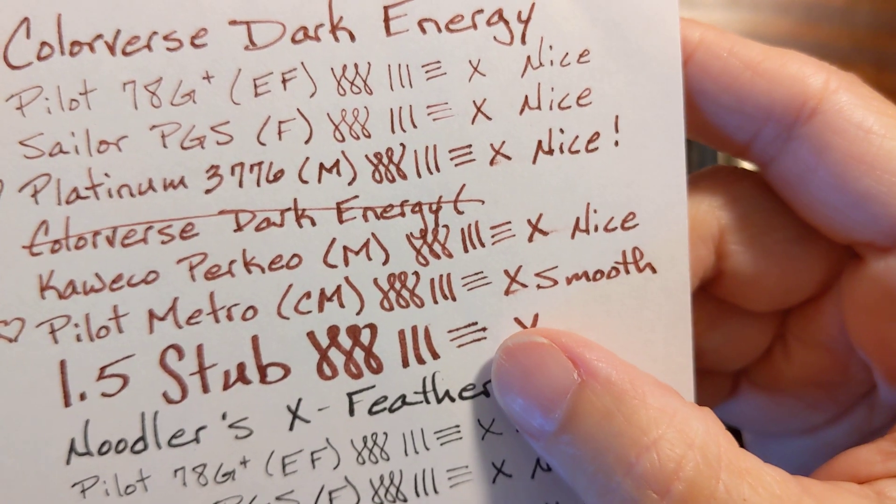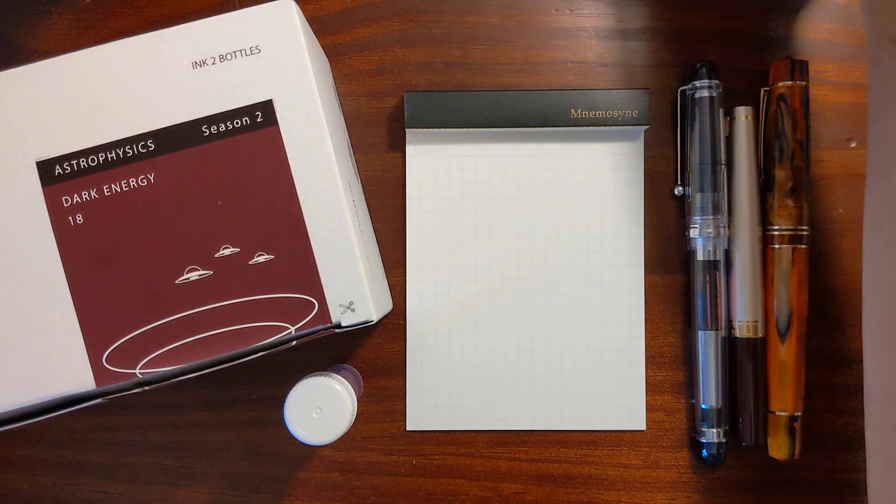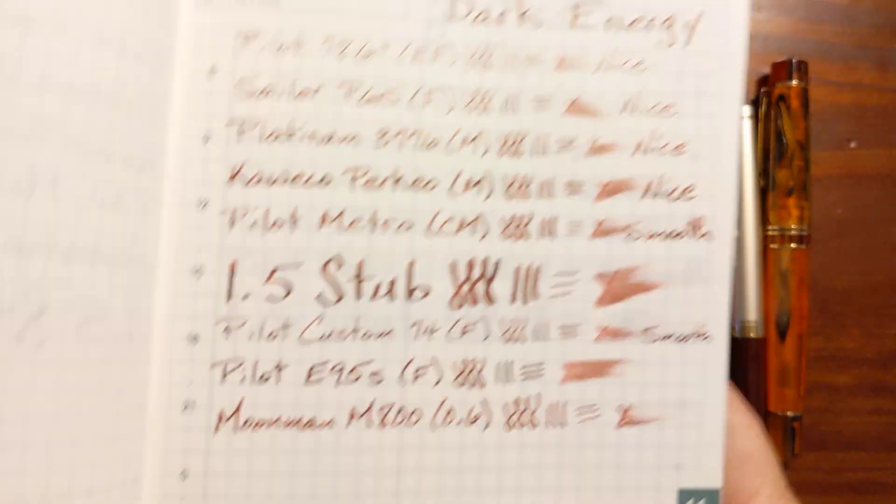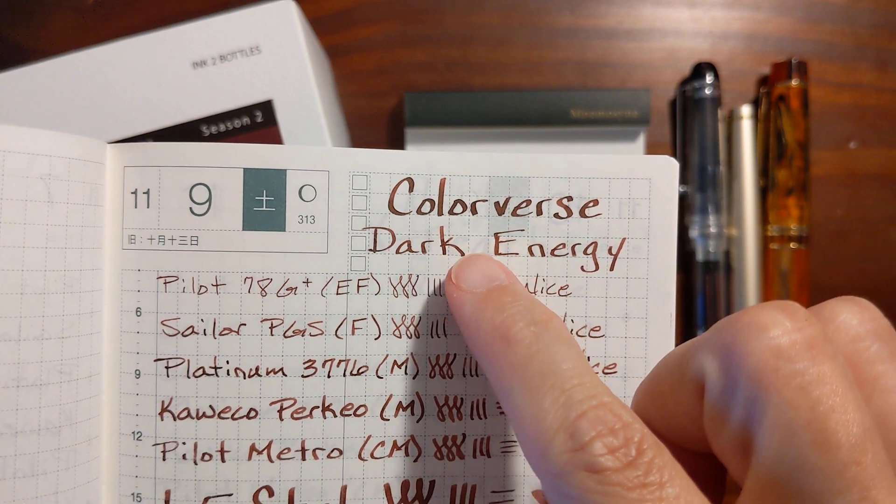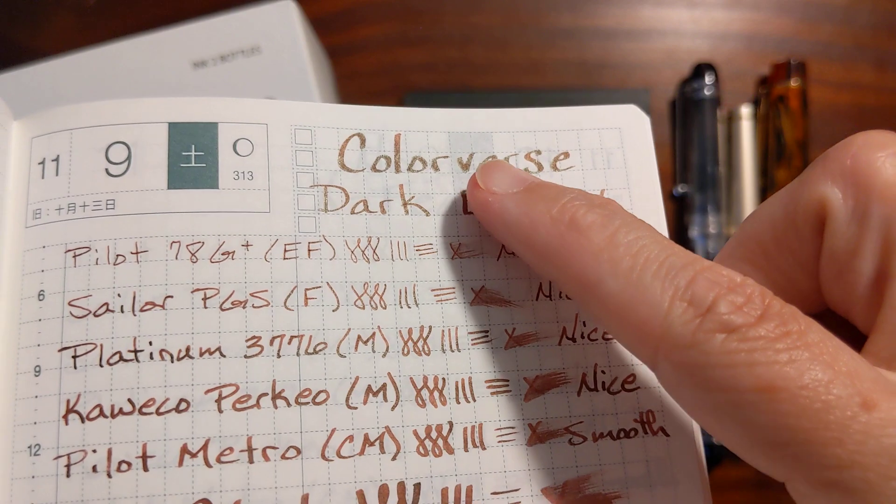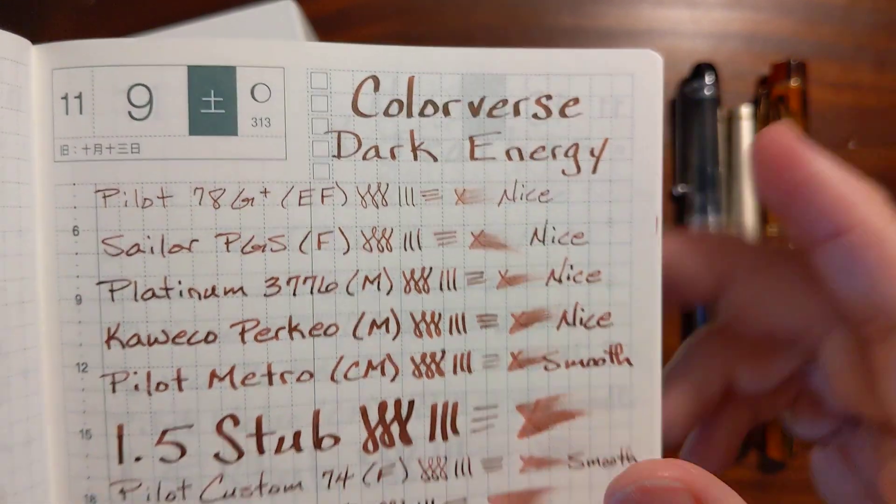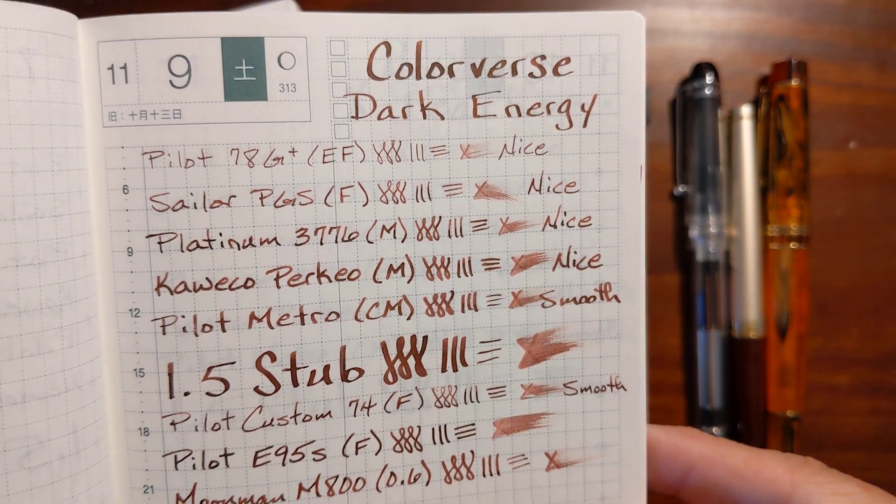There wasn't a ton of feathering on the poor quality paper and then when I tried it on my Tomoe River paper it's got nice subtle shading. It's not over the top and it's got some sheen that's not just over the top and in your face.